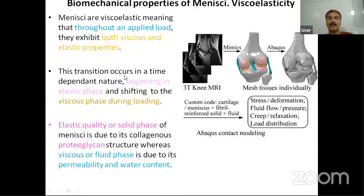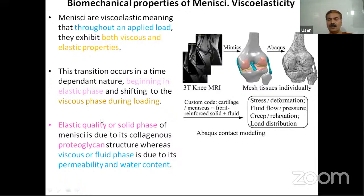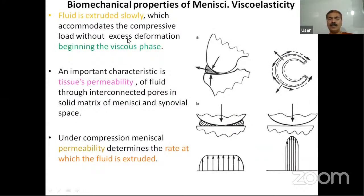Coming to the biomechanical properties: the first is viscoelasticity. The menisci are viscoelastic — throughout an applied load they exhibit both viscous and elastic properties. The transition between them is time-dependent. It begins with the elastic phase, then shifts to the viscous phase while being loaded. The elastic or solid phase is governed by the collagenous proteoglycan structure, whereas the viscous or fluid phase is due to the permeability and water content. Fluid is slowly extruded out, accommodating compressive load without excess deformation — the beginning of the viscous phase.